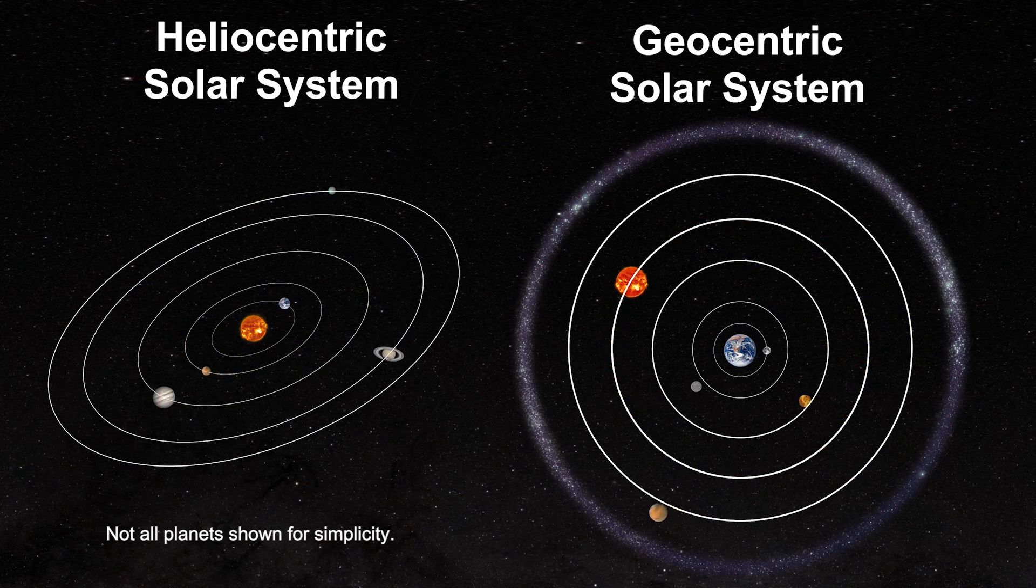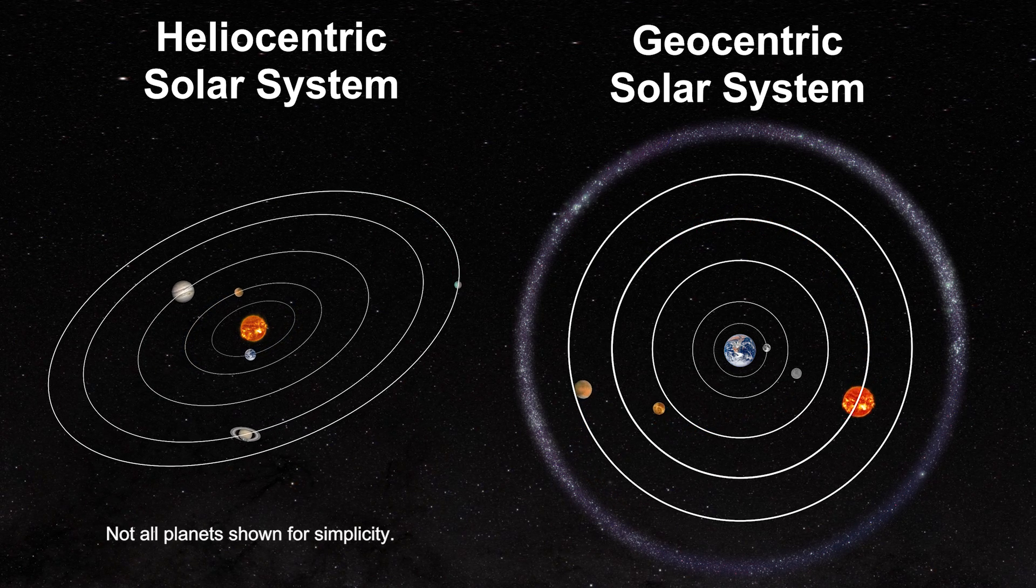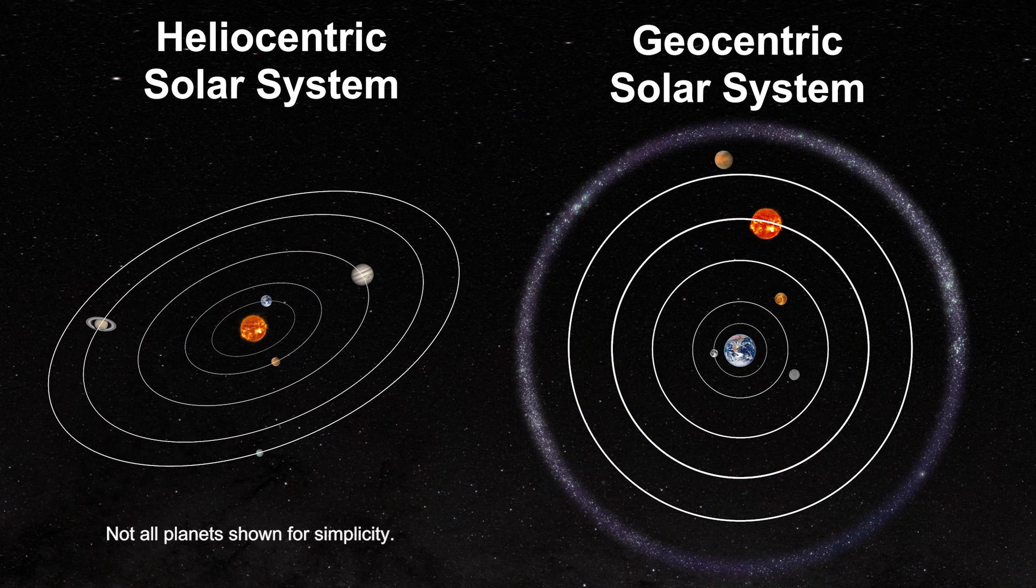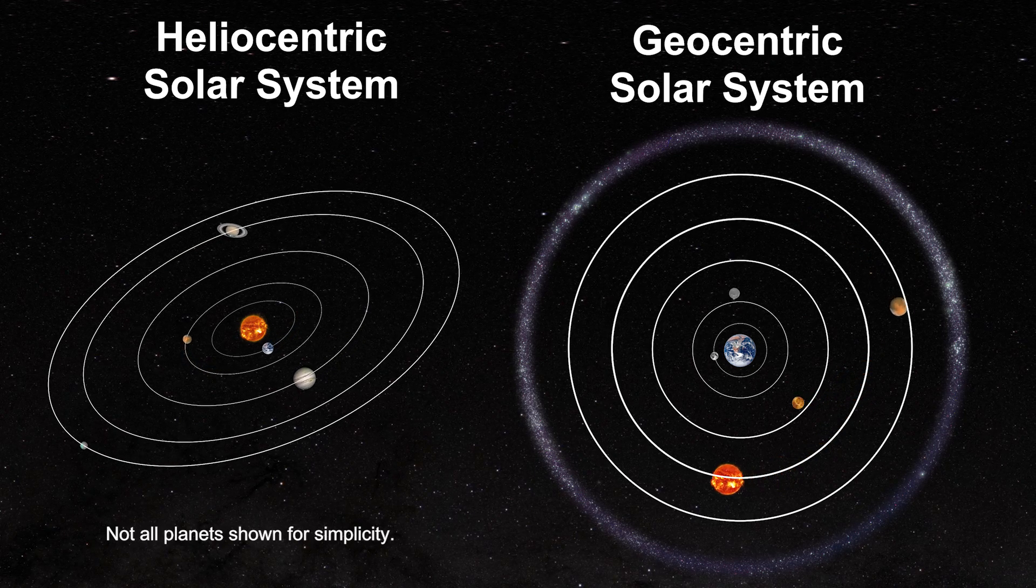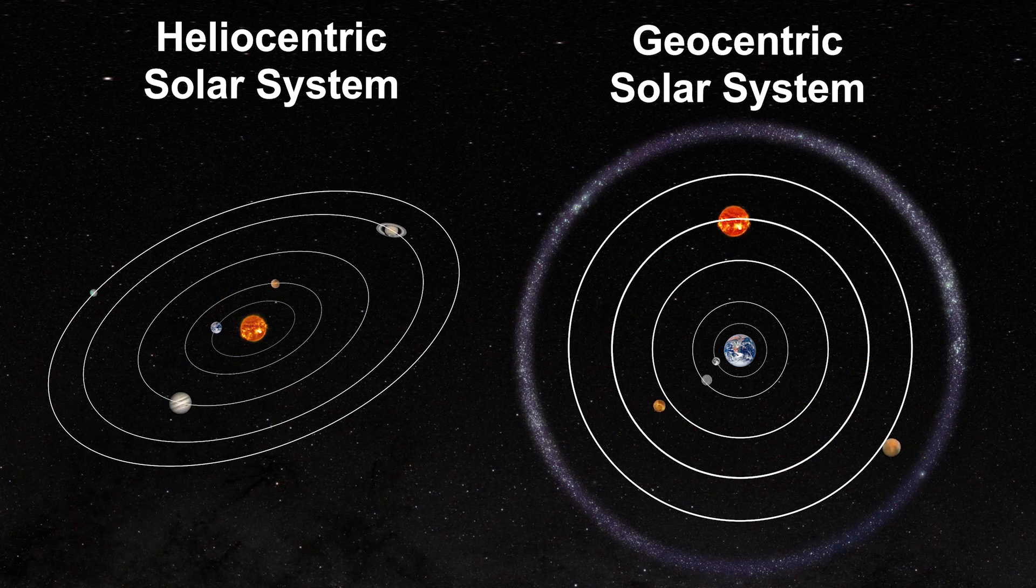Though both of these models explain the movement of the sun and the planets in the sky, the heliocentric model was adopted because the movement required was much simpler.